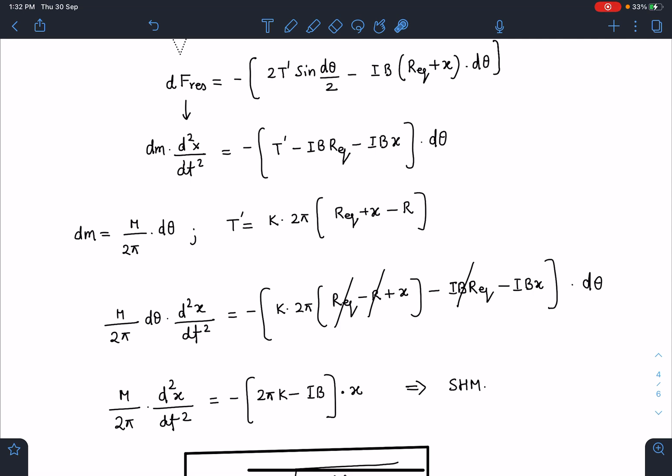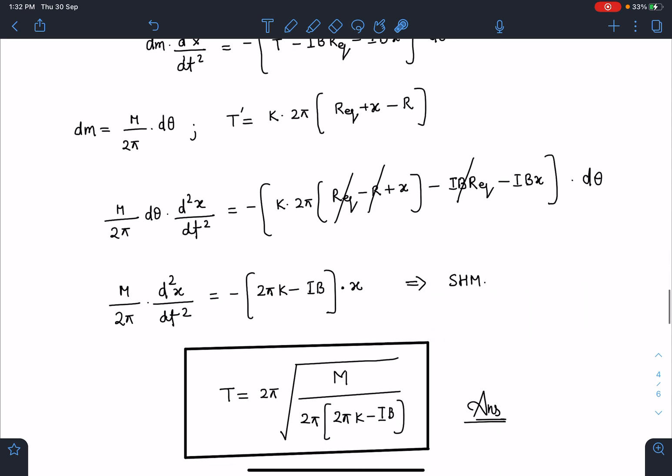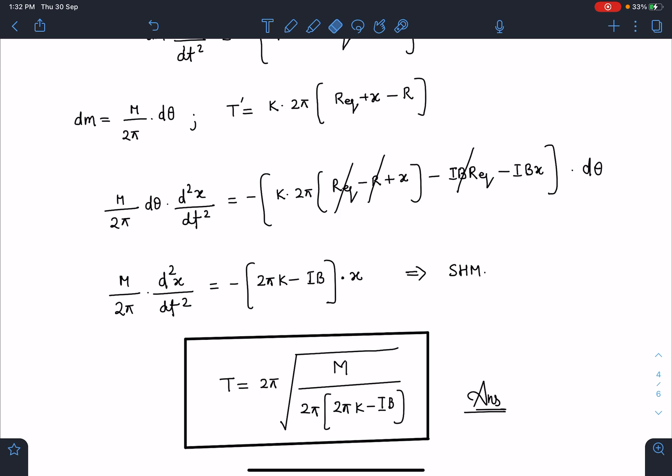Equals minus [2πK - IB] times x. So since this term is minus x equal to something times minus x, it is confirmed that this is simple harmonic motion. And from here I can write the time period: T = 2π√[M/(2π(2πK - IB))]. You can see here time period is approaching towards infinity if 2πK is equal to IB.